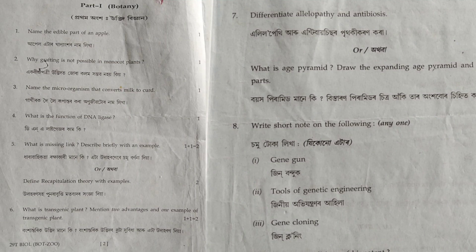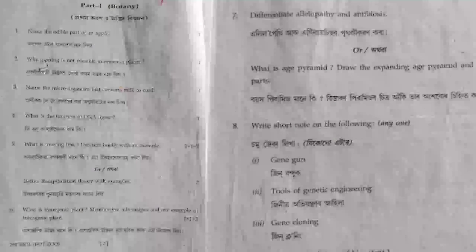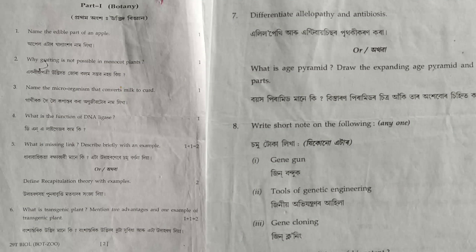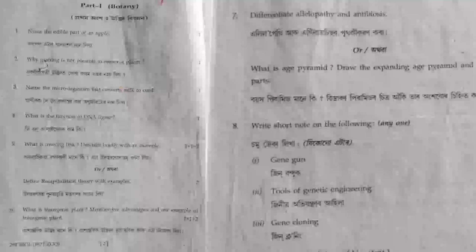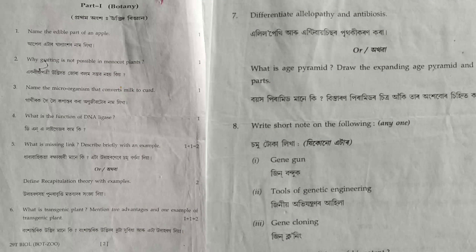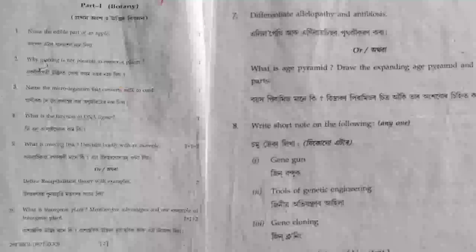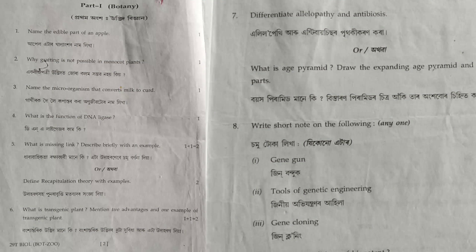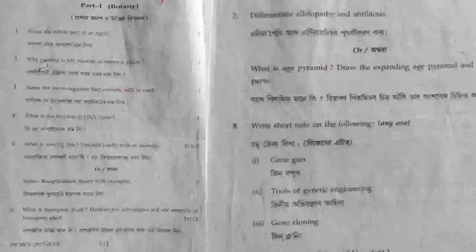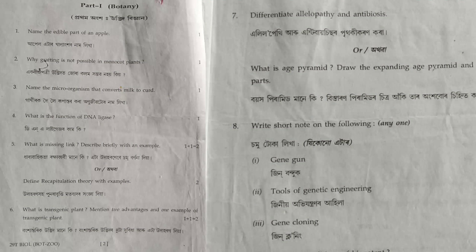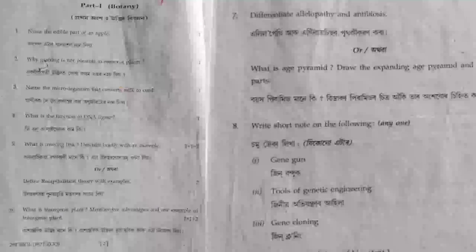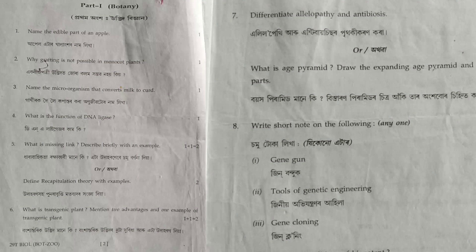Next question: what is a missing link? Describe briefly with an example. A missing link means extinct fossil animals that share the characters of two different groups. For example, Archaeopteryx lithographica was an intermediate animal between reptiles and birds.